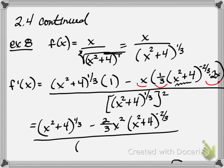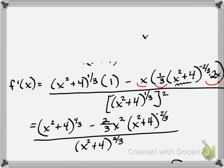All over x squared plus four — that's a power raised to another power, so power to power we multiply. Let's go ahead and factor out the least powers. I'll erase the top. In the top, the least power is negative two-thirds. We have two terms and both have a common factor of x squared plus four, so we're going to take out the least power of it, which is the negative two-thirds.